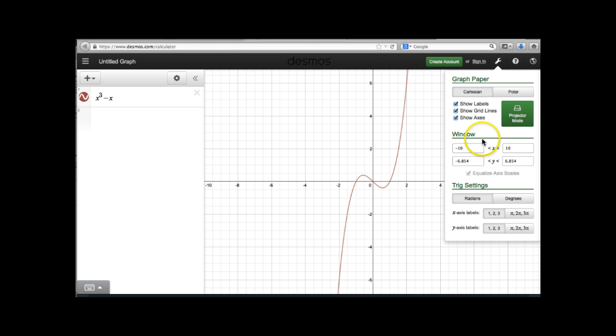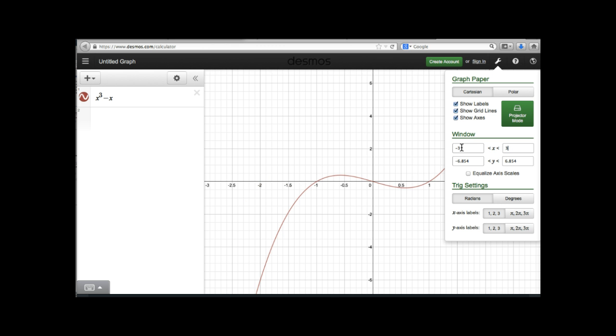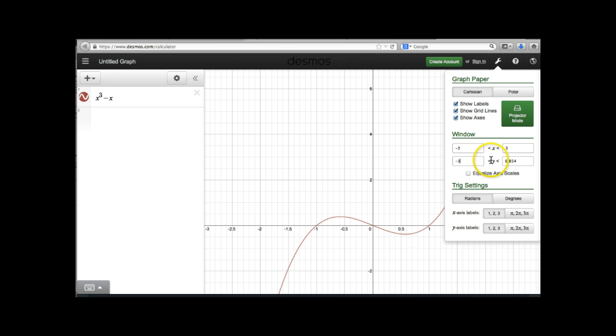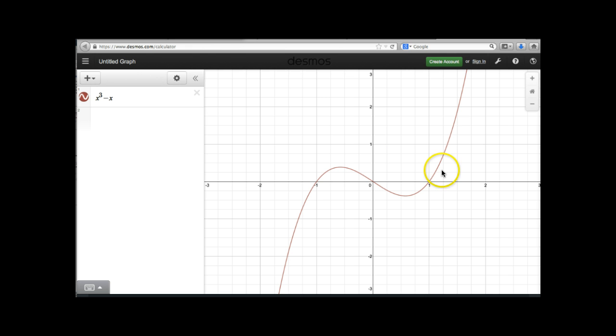So I would probably make my x minimum be maybe negative 3, and you can see it adjusted right away. I'm going to tab over here and make this be a positive 3. And notice now how much more spread out these curves are. It's easier to see where things are. So I would do the same thing with my y axis. I could adjust my minimum somewhere down here around maybe negative 3, and then I can adjust my y maximum at positive 3. And then I can just click back on the wrench, and now my picture is a little bit clearer.